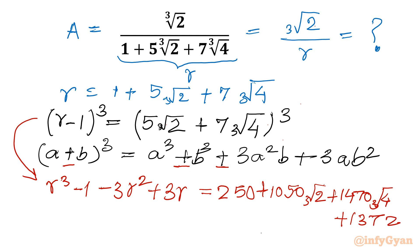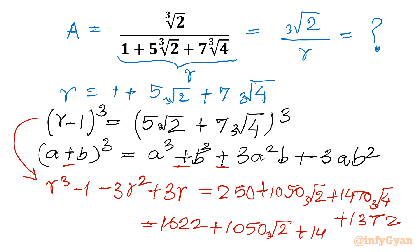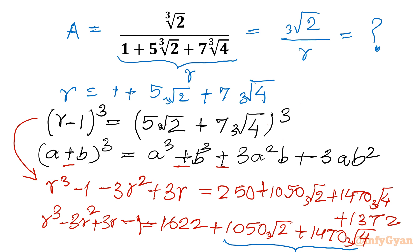Simplify the right hand side first: 250 plus 1372 gives 1622. Then I will write 1050 cube root 2 plus 1470 cube root 4. The left hand side is R³ minus 3R² plus 3R minus 1. Now I will take 210 common from the last two terms of the right hand side.